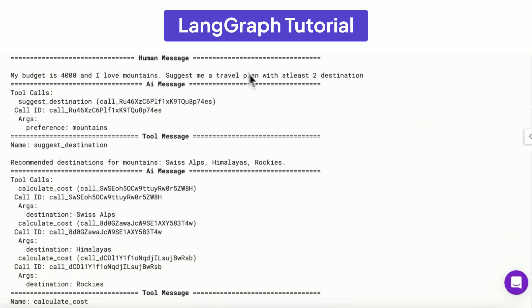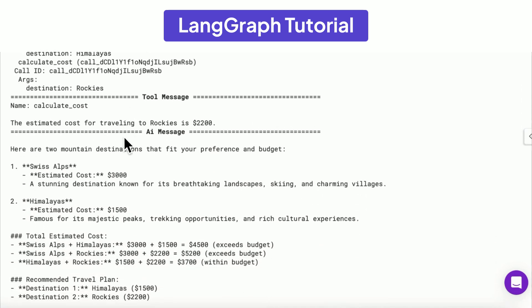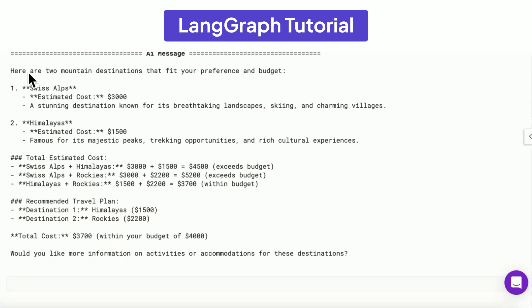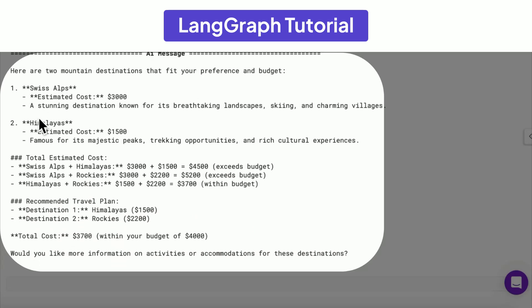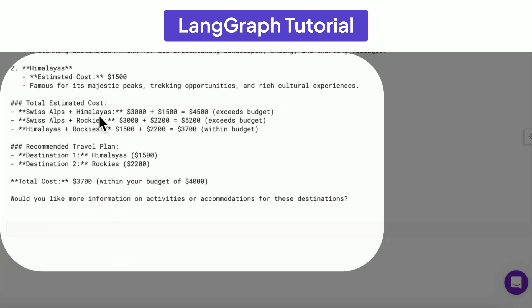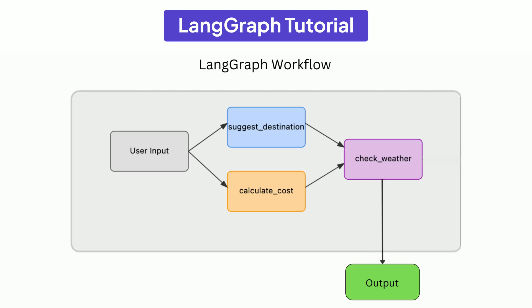As you can see, the message from the AI agent will suggest us two things like Swiss Alps and the Himalayas with the estimated cost and total estimated cost. Then the recommended travel plan and the total cost, which is under our budget, that is $4,000.